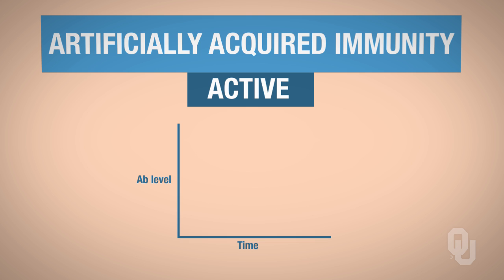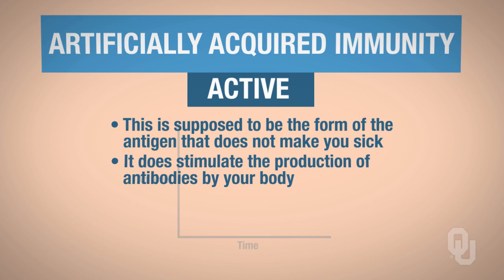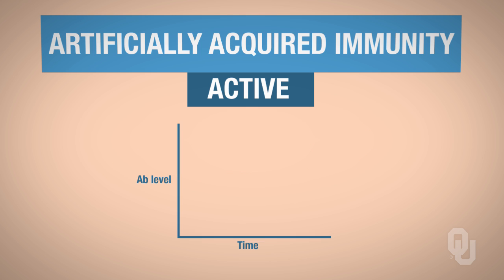Then there's the active artificially acquired form, where you've been vaccinated with the non-virulent form of the antigen — the form that does not make you sick, but does stimulate the production of antibodies by your body. You mount an immune response and make antibodies. The first vaccination is given, and over time the antibody level drops, then goes back up when a booster is given. Notice how much more the antibody level increased with the booster — your level goes up significantly and you produce more memory cells.